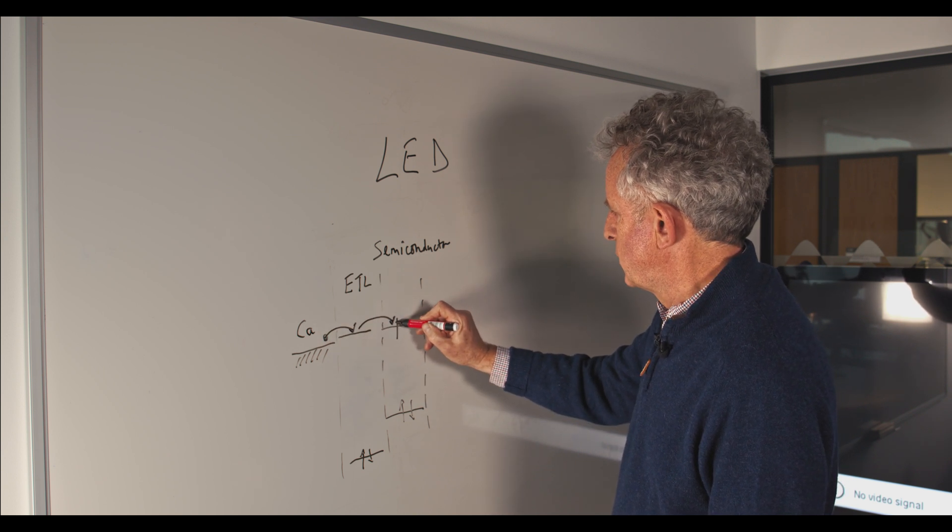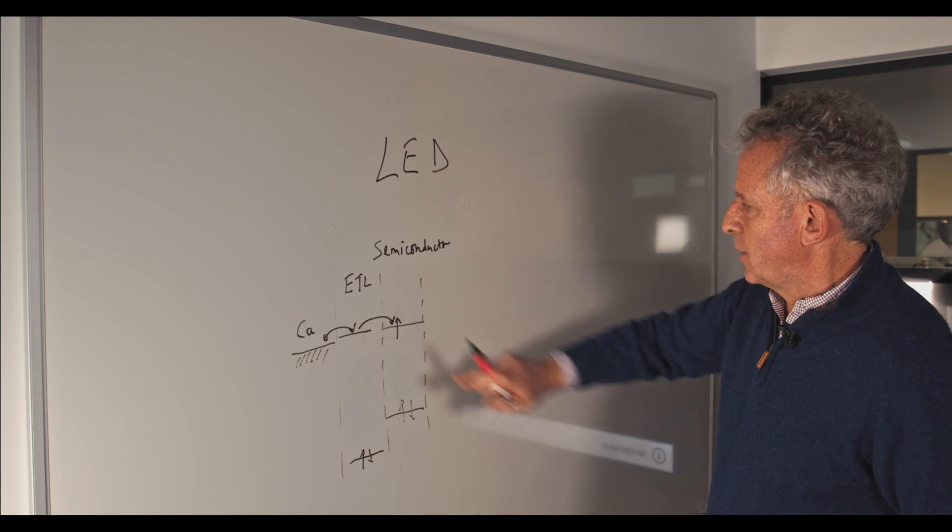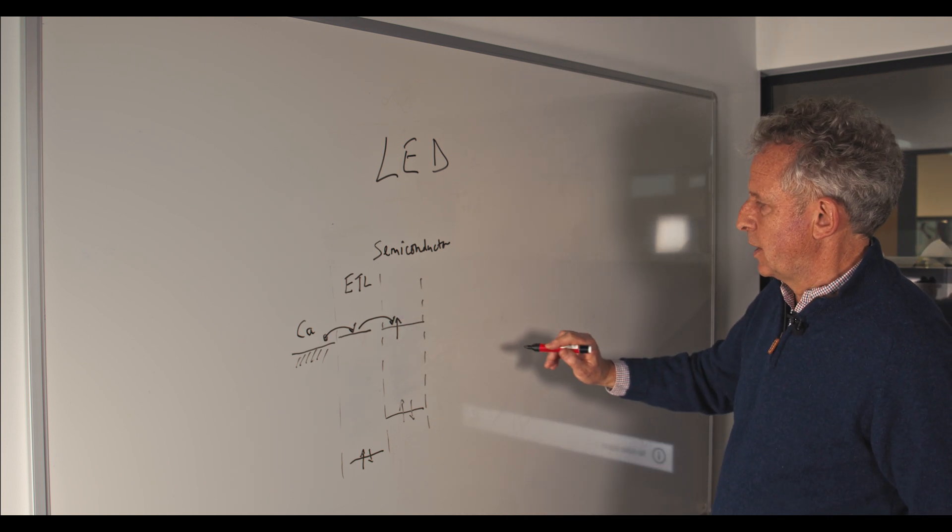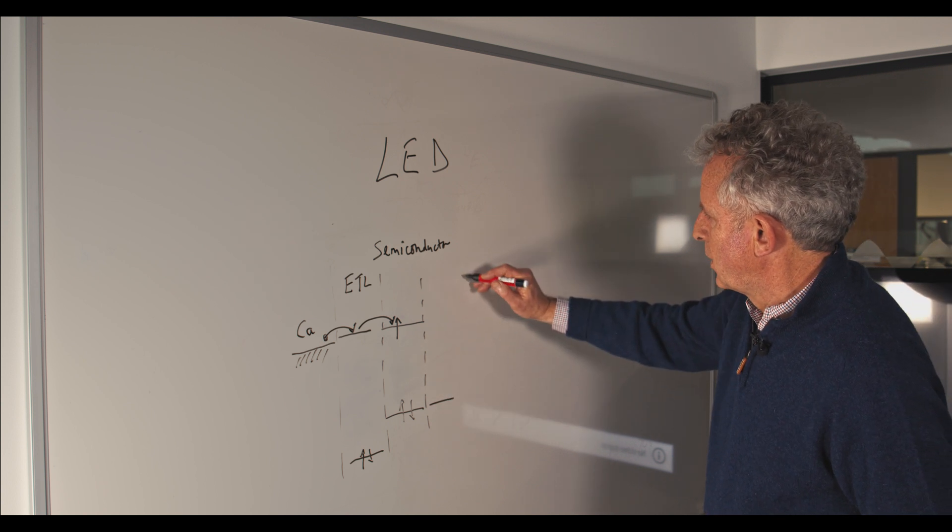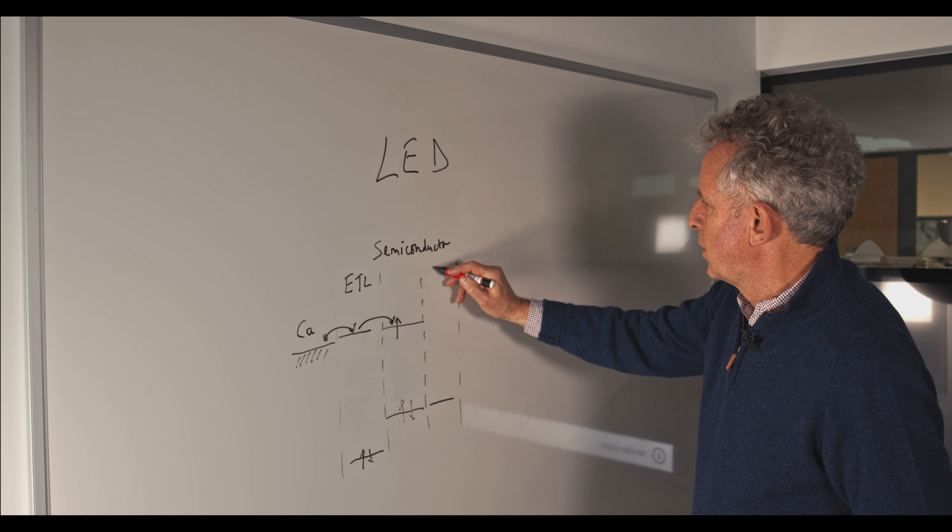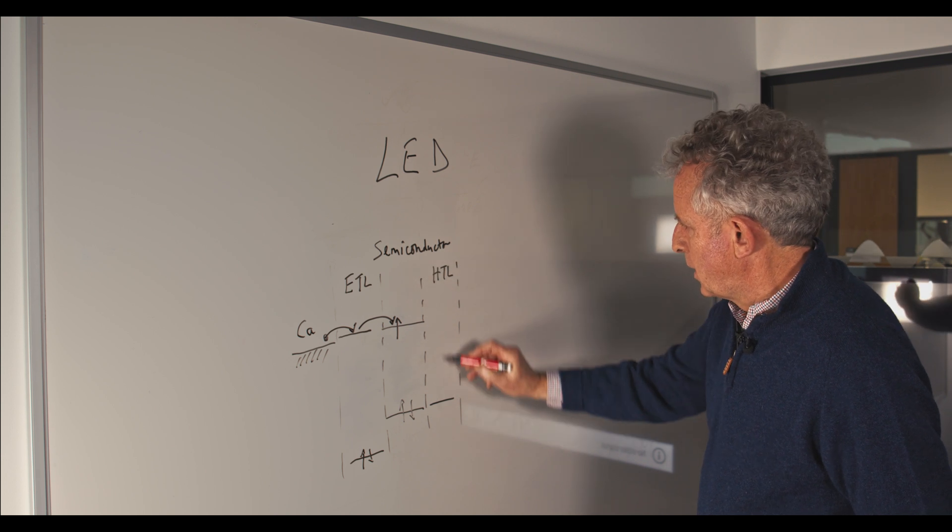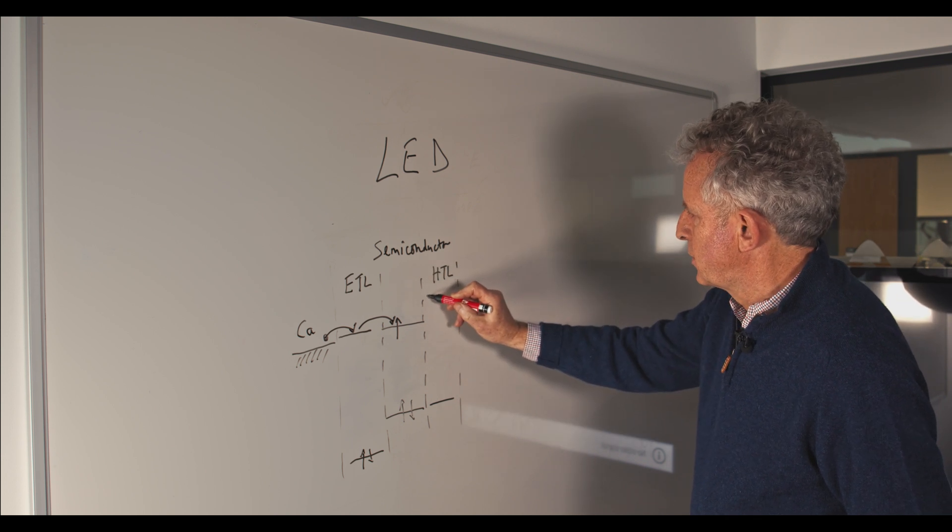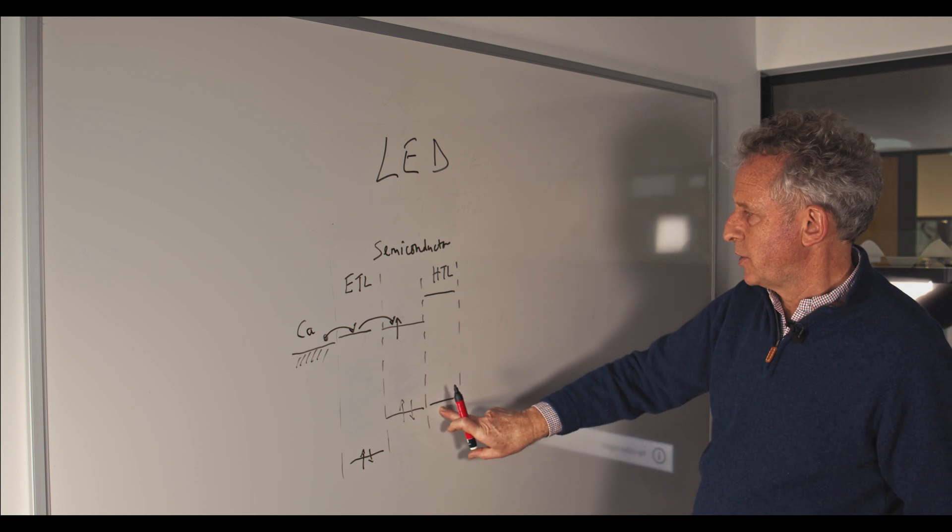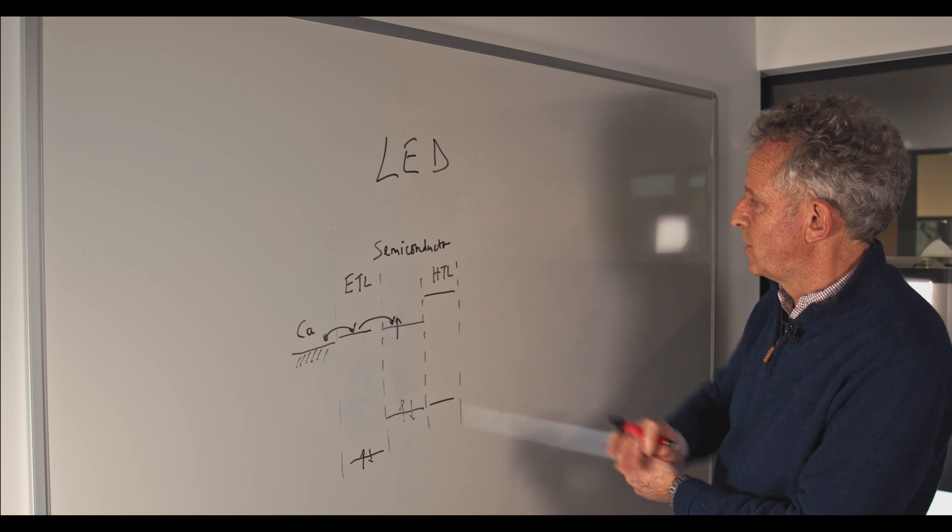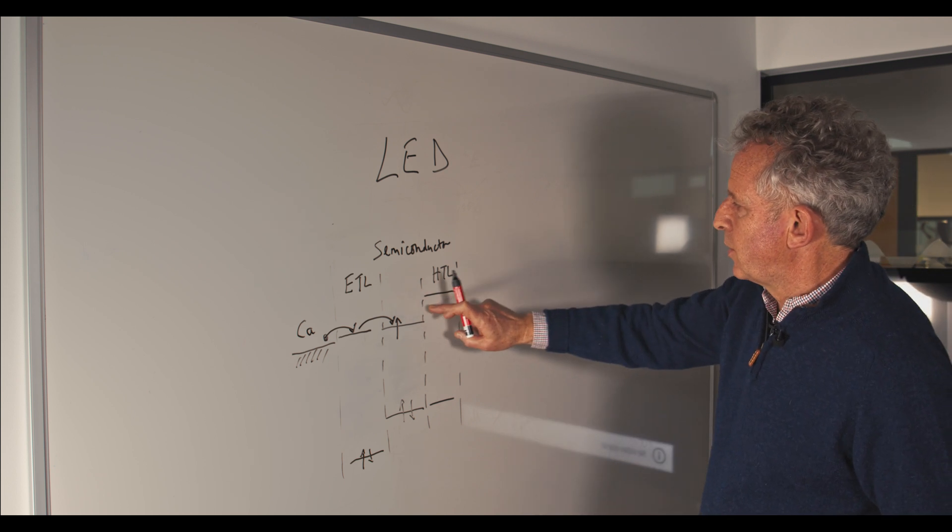An electron from the calcium will travel into the electron transport layer and then onto the conduction band level on the semiconductor. Then analogously for hole injection, I'll have a hole transport layer, and I will again align levels so that I've got good alignment for the valence band states.